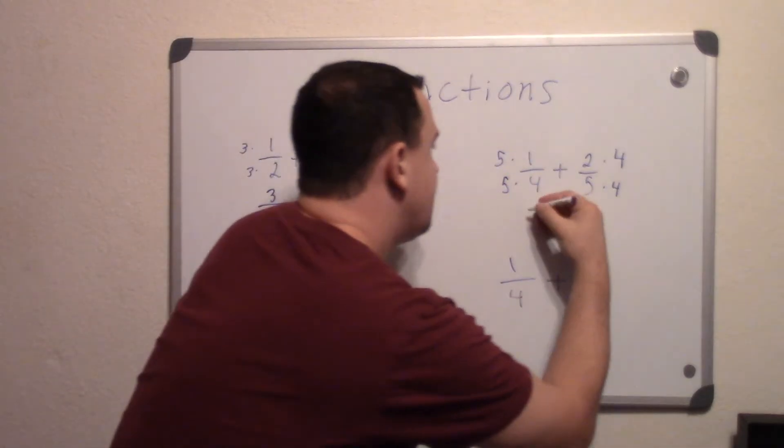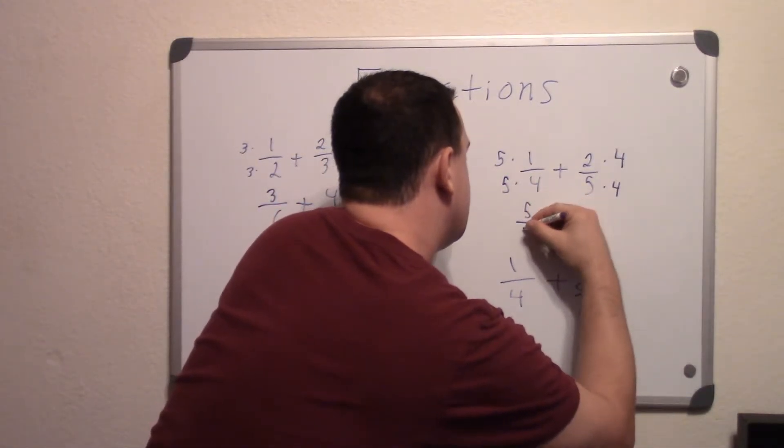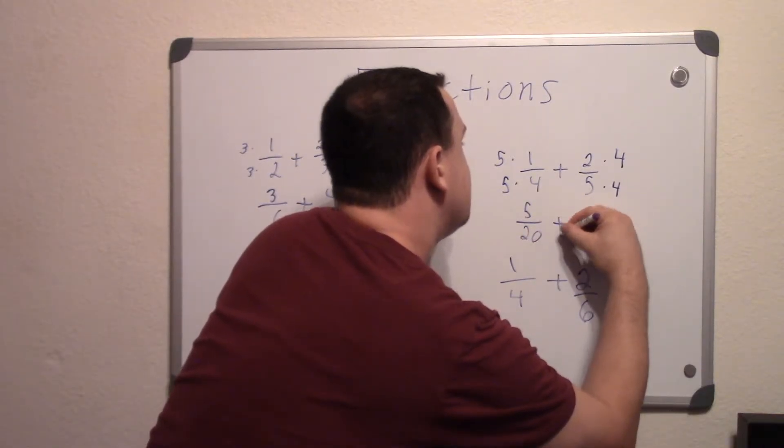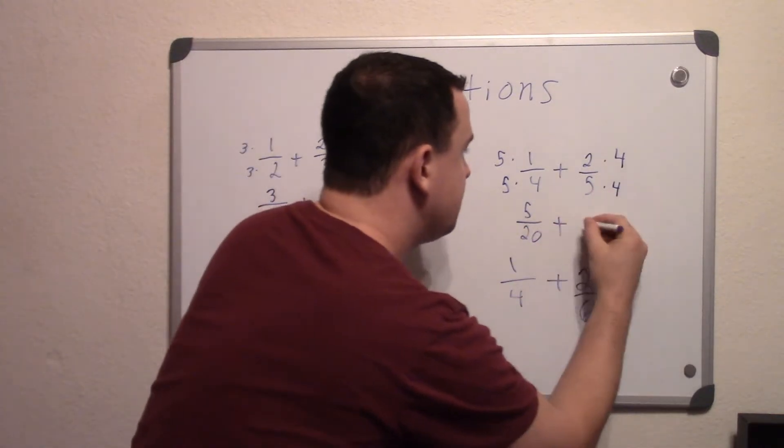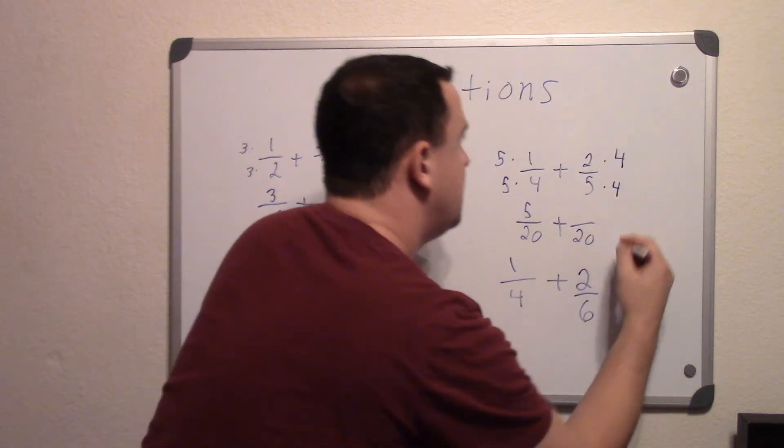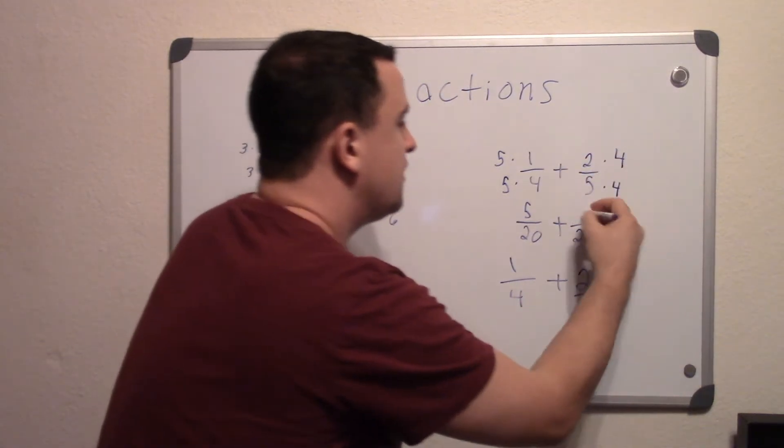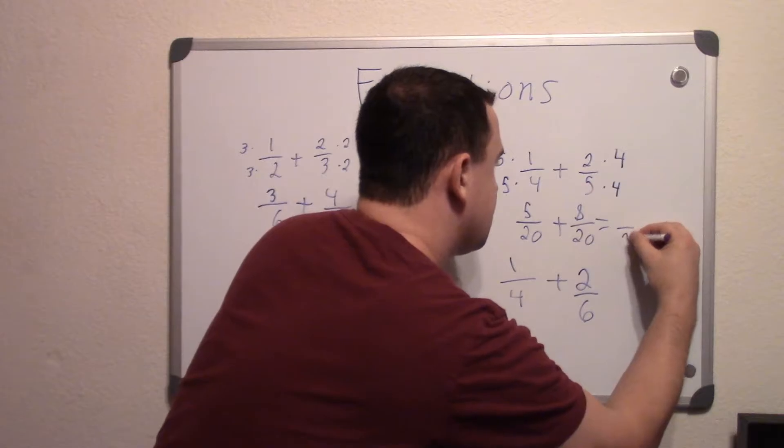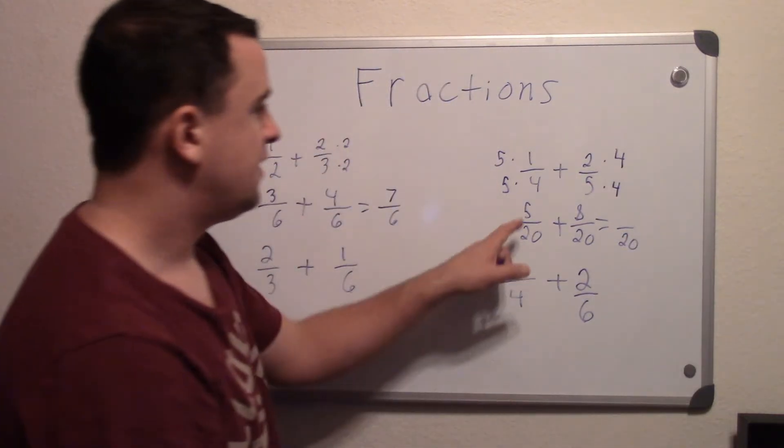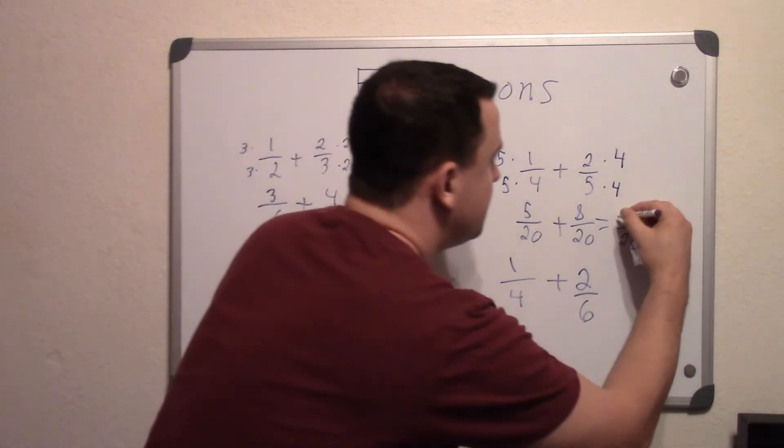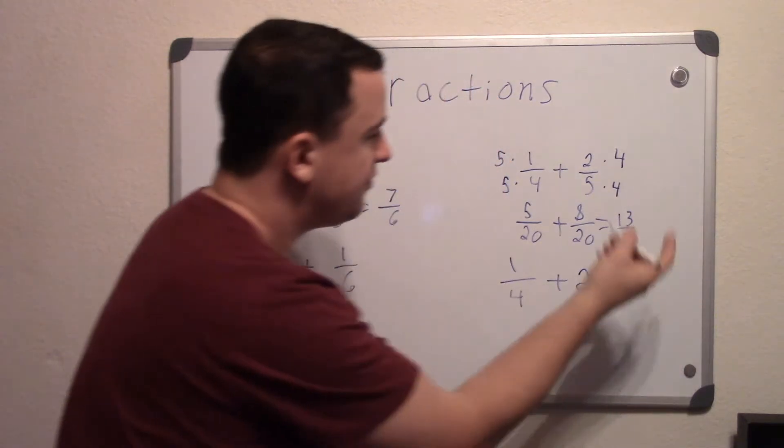5 times 1 is 5, and that's going to be over 20, plus 20 again. And 2 times 4 is 8, so now we get 20, and 5 plus 8 is 13. And that's your answer.